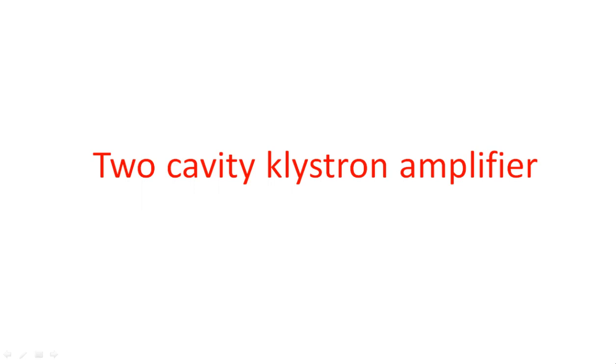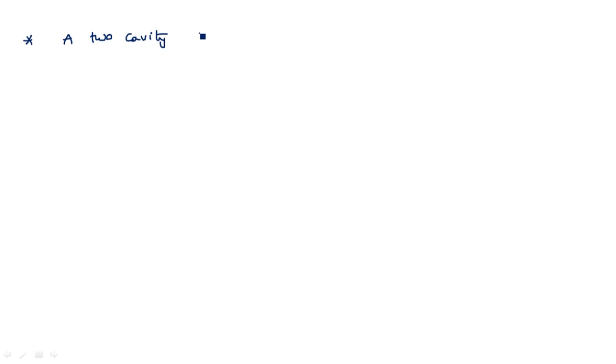In this video I am going to explain about the two-cavity klystron amplifier, which is very important from an examination point of view. It is a type of O-type tube, also known as linear beam tubes. A two-cavity klystron is basically an amplifier which is used to amplify the RF input signal at the output.